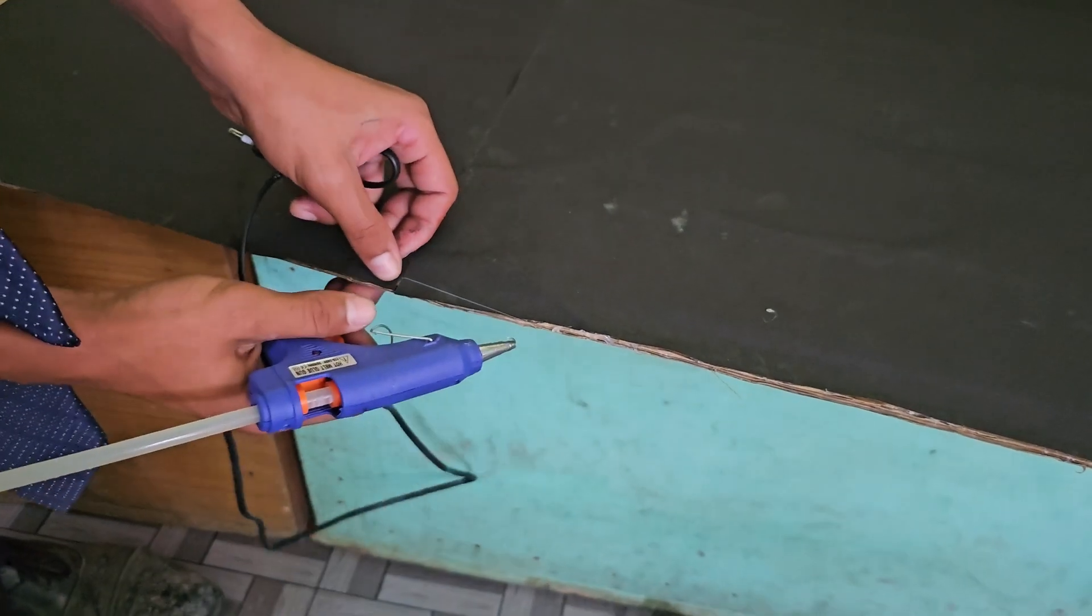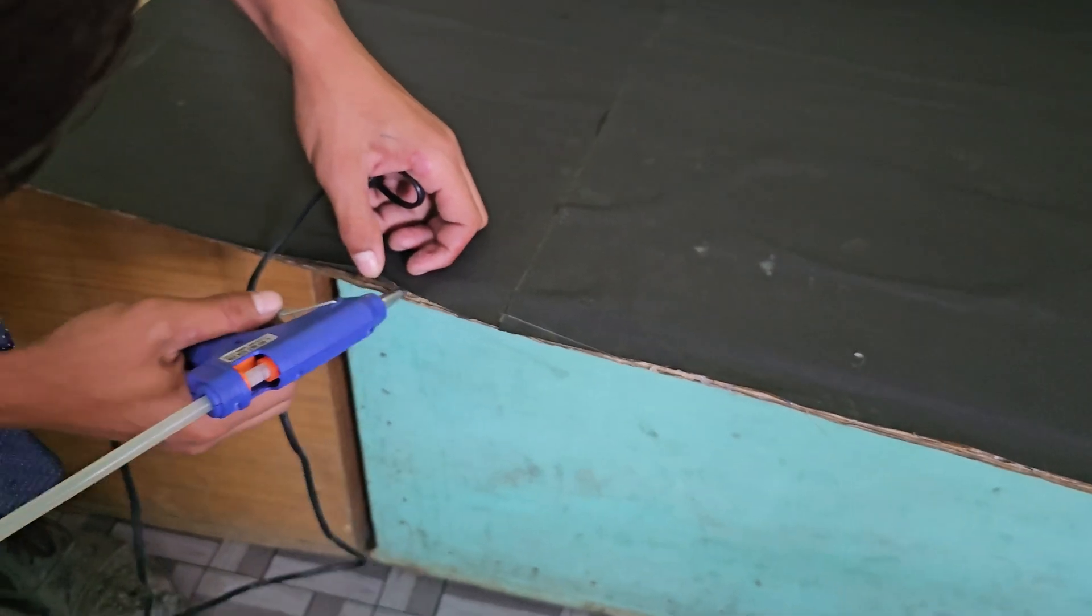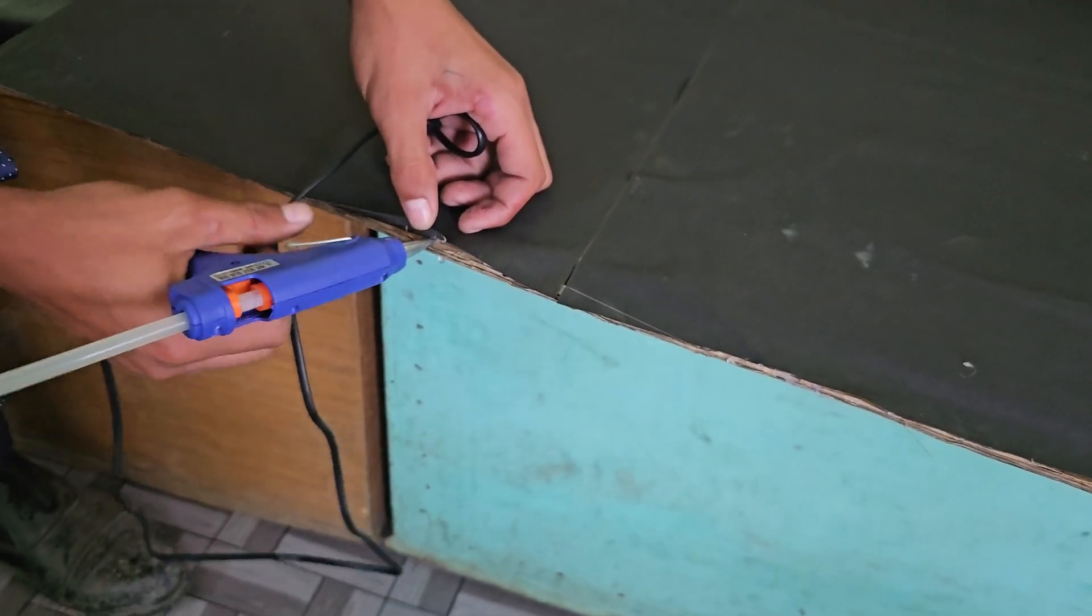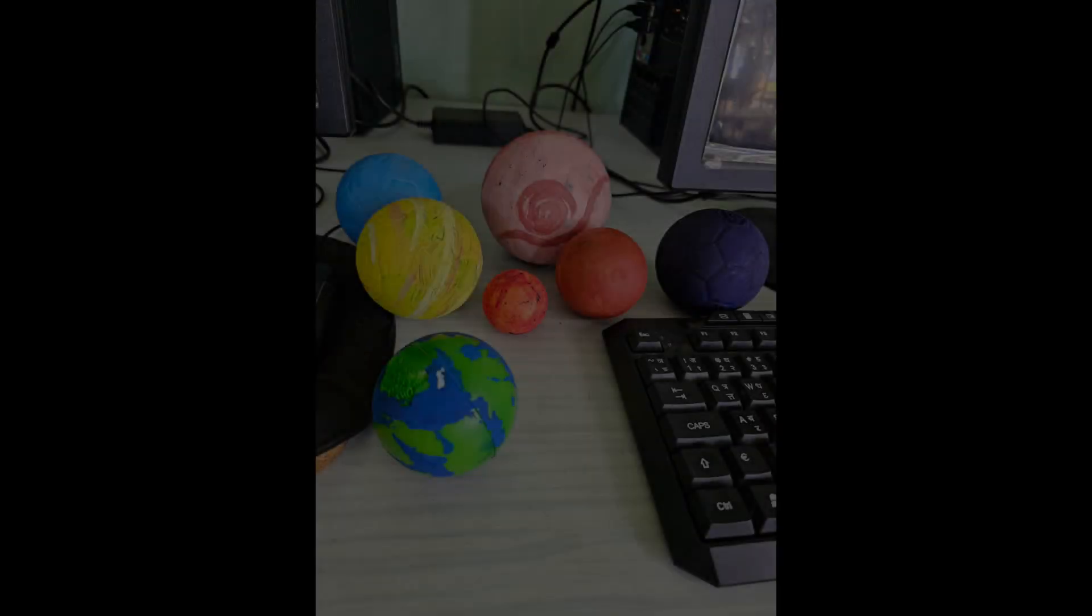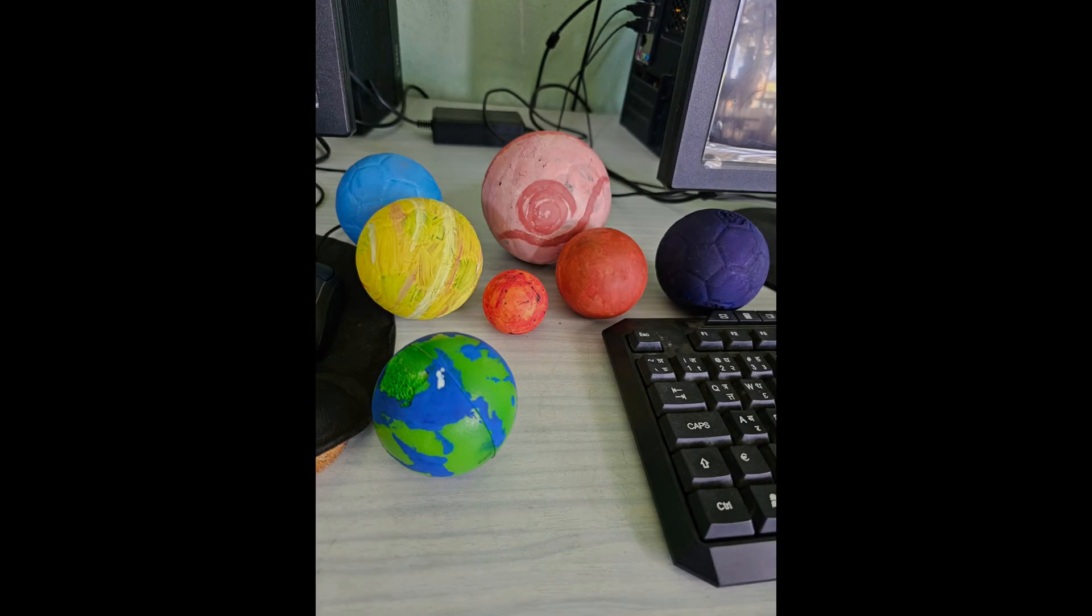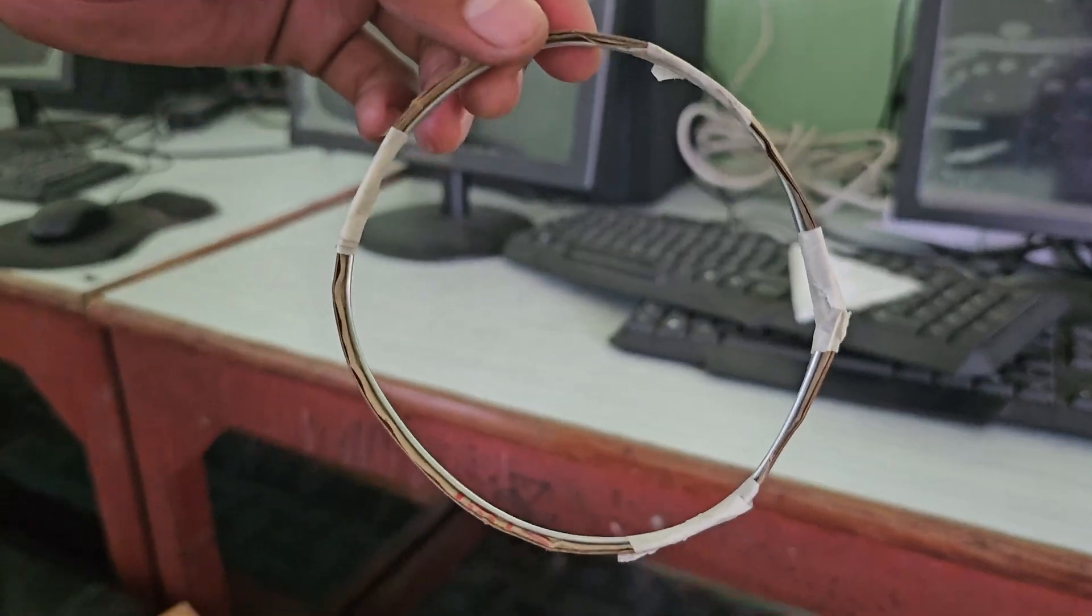Now let's start. First of all we will paste the chart papers on the cardboard. Now we will start to paint the planets and the sun, and also make the ring of Saturn with steel wire and cardboard.